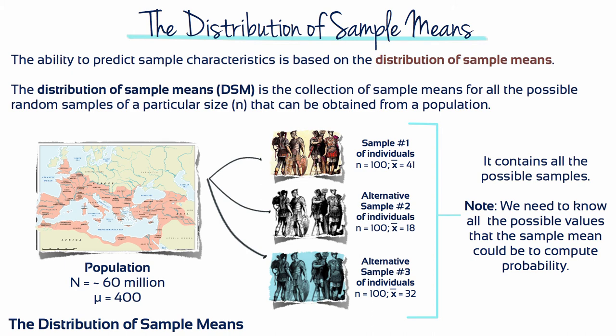Suppose a researcher selects a sample of n equals 25 students from a state college. Although the sample should be representative of the entire student population, there will almost certainly be some segments of the population that are not included in the sample. Furthermore, samples are variable — they're not all the same. If you take two separate samples from the same population, the samples will be different.